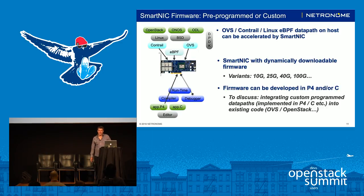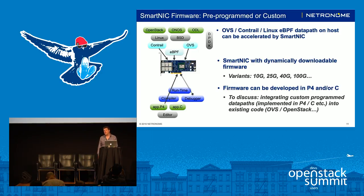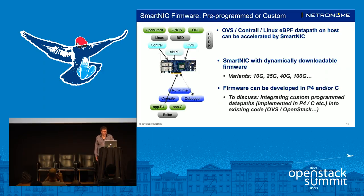Further programmability is supplied by using traditional programming languages. The C language you'd be familiar with. P4 is a new language specific to the networking domain, allowing you to very easily and conveniently do packet parsing, matching, and actions. These can all be compiled into the firmware for the SmartNIC, and we can then combine P4 or C-derived firmware with OVS or eBPF control-based firmware.